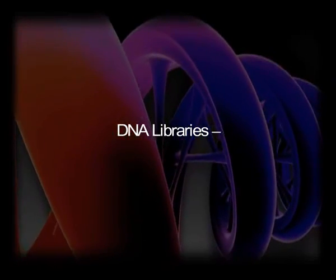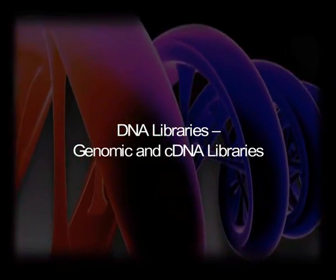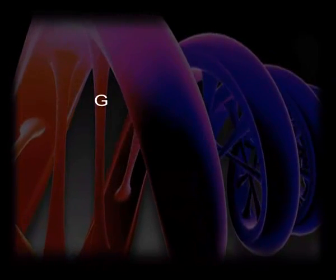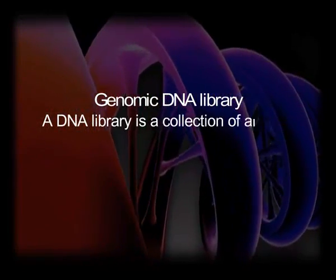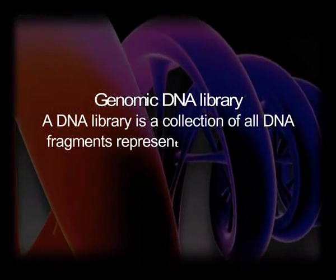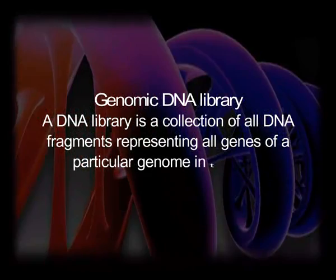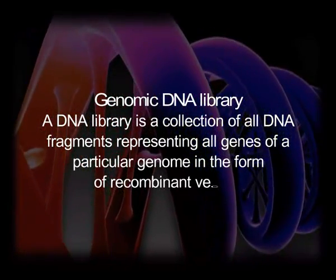One of the easiest strategies for isolation of any gene of interest is to first construct a genomic or cDNA library. A DNA library is a collection of DNA fragments representing all genes of a particular genome in the form of recombinant vectors, each recombinant vector present in a host cell and each host cell present in the form of a bacterial colony or plaque.